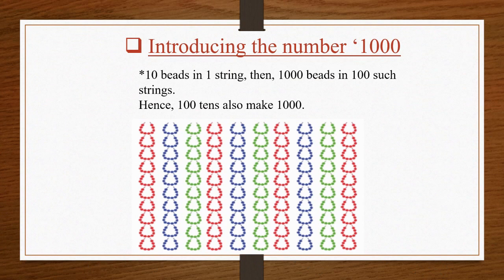Students, here the last example. You can see the picture of strings with beads on your screen: 10 beads in one string. Then 1,000 beads in 100 such strings. Hence, 100 tens also make 1,000.